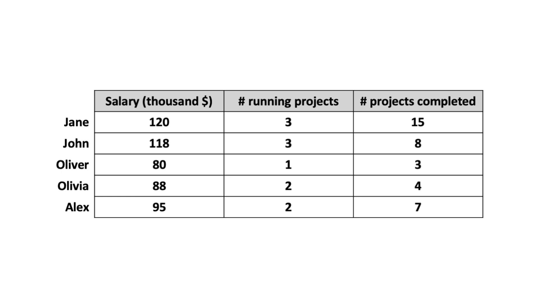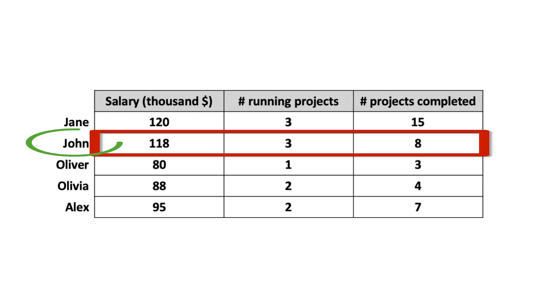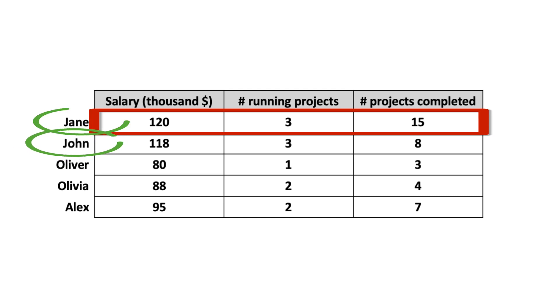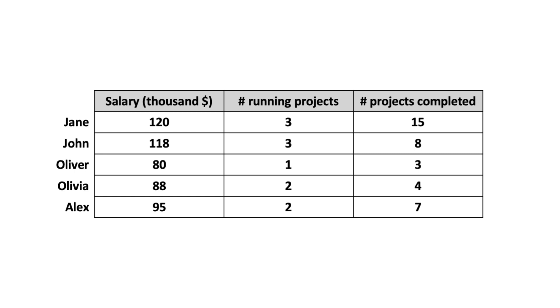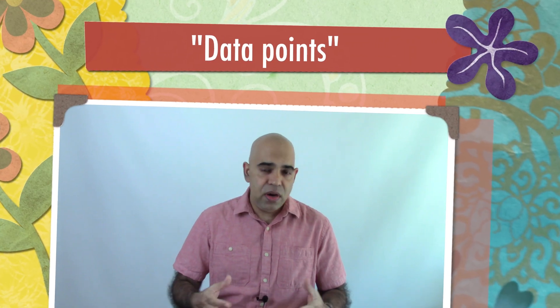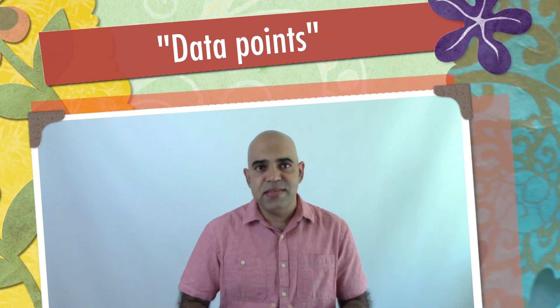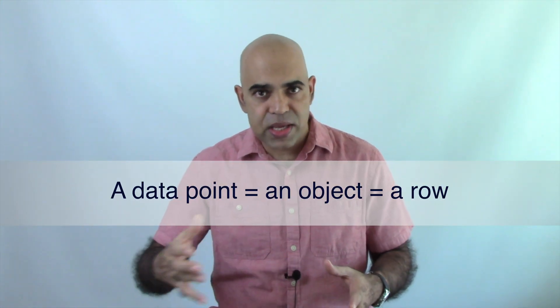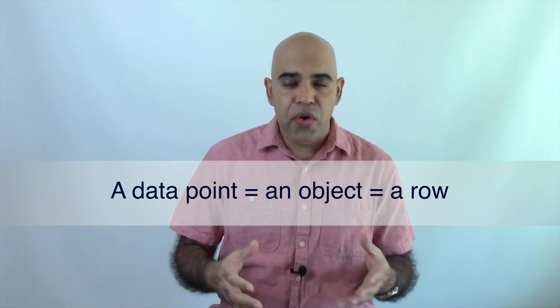What is an object in the data science context? An object in a data table or tabular data is the smallest unit of data. In this example, each employee is an object. For example, data associated with John is an object. Jane is considered the name of another object in this example. A general convention is to keep the objects of a data table in rows. You might have heard the phrase 'a data point.' A data point is nothing but an object — a data point equals an object equals a row of the data table.